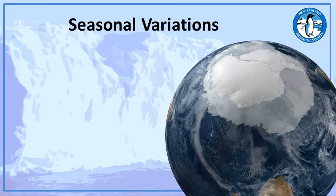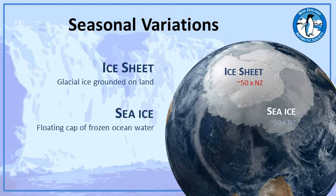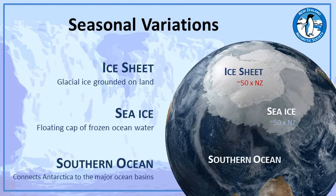Moving on to seasonal variations: the ice sheet itself is around 50 times the size of New Zealand — that's the permanent ice sitting over the continent. During winter, the sea ice grows to another 50 times the size of New Zealand, effectively doubling the size of Antarctica. The sea ice is very important, and underlying it and extending around Antarctica is the Southern Ocean, which is part of global ocean patterns and circulation systems.